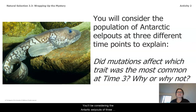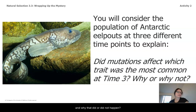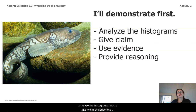You'll be considering the Antarctic eel pout at three different times to explain: did mutations affect what trait was most common at time three, and why that did or did not happen. I'll demonstrate first and show you how we're going to analyze the histograms and how to give claim, evidence, and reasoning for this argument.